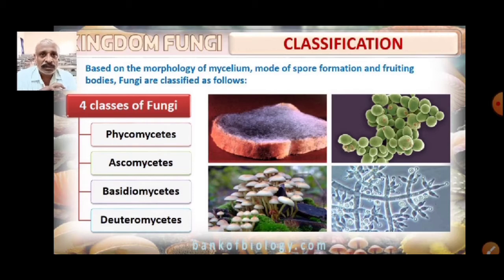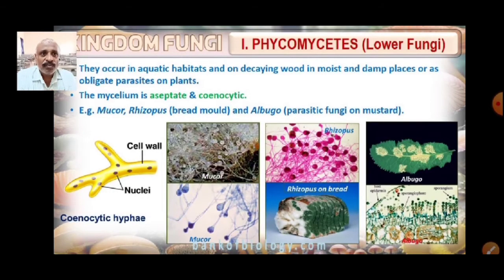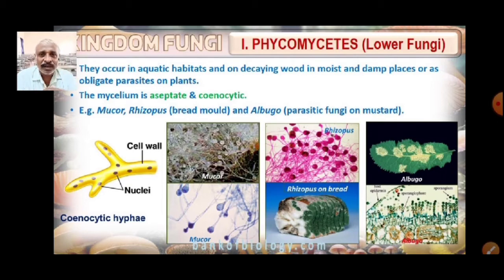These are the four classes in our syllabus. We continue with Phycomycetes, commonly known as the lower fungi. They are found in aquatic habitats, on decaying wood, in moist and damp places, and as obligate parasites on plants. The mycelium of these Phycomycetes is aseptate or coenocytic.